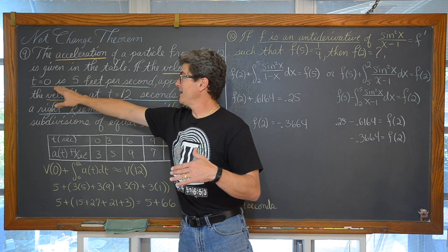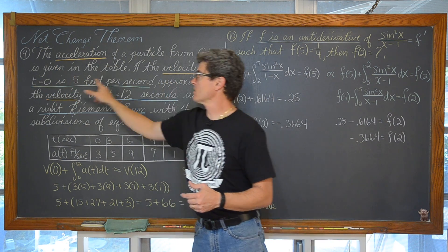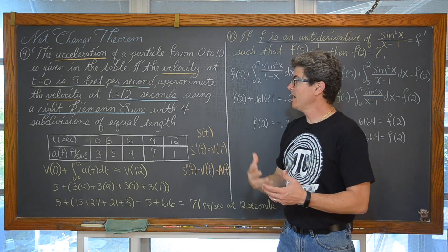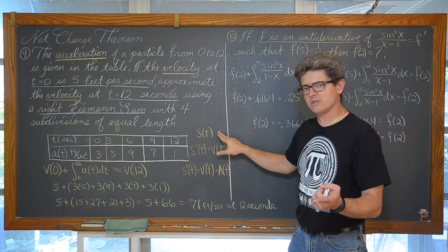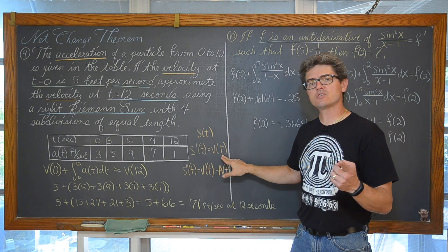So I am given an initial condition. At time 0 we are going 5 feet per second. And then because we have acceleration, which I am trying to remind you over here, we have the position function. The derivative of the position function is velocity.